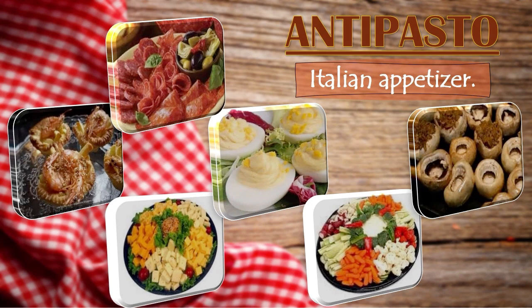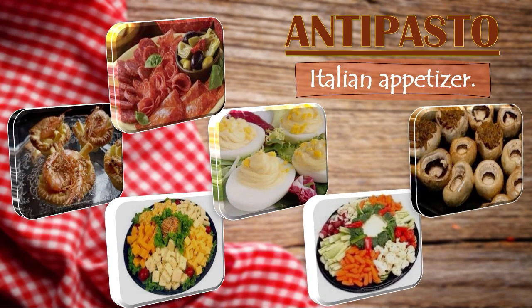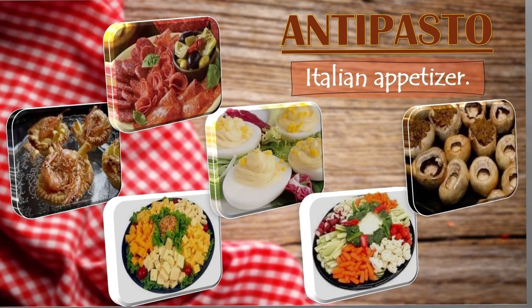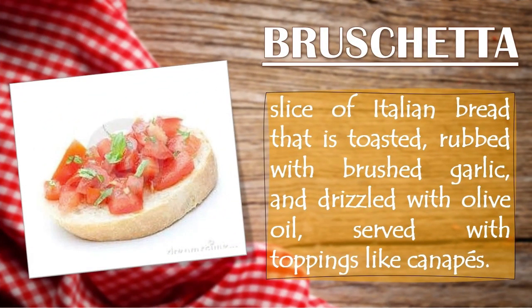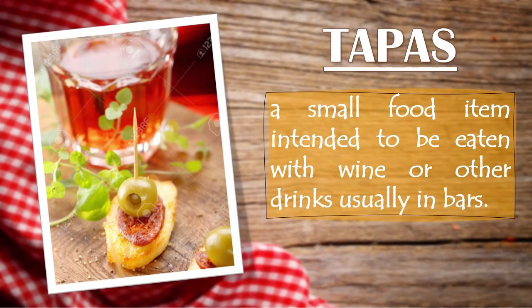Antipasto also includes cheese such as provolone and mozzarella, hard-cooked and stuffed eggs, relishes or raw vegetables, and mushrooms and other vegetables. Next is bruschetta — a slice of Italian bread that is toasted, rubbed with garlic, and drizzled with olive oil, served with toppings. We also have tapas: small food items intended to be eaten with wine or other drinks, usually in bars, served in small portions intended to be eaten immediately.